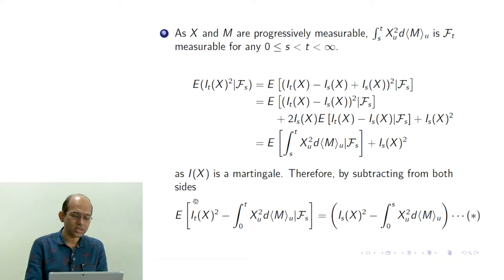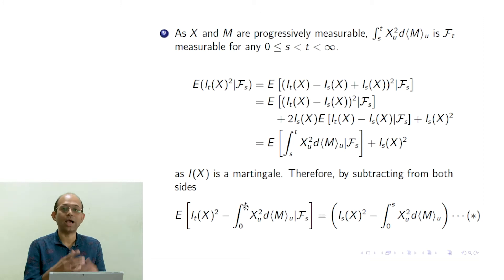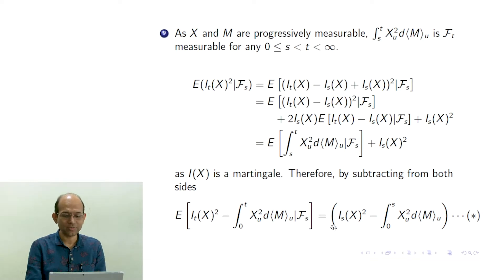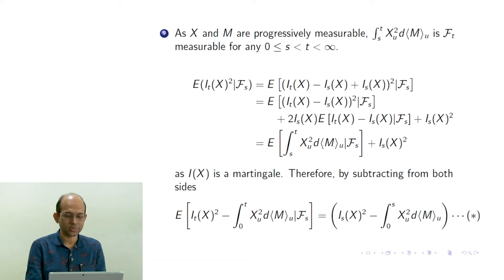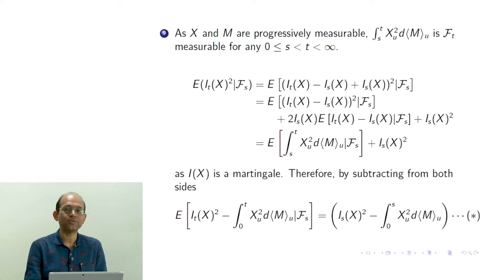If we define Y_t = I_T(X)² − ∫₀ᵗ X_u² d⟨M⟩_u, then the conditional expectation of Y_t given F_S equals Y_S. That is the criterion for a martingale. Since I is in L², its square has finite expectation, so Y_t satisfies the martingale property. Therefore this whole process is a martingale as a function of t. We name this result as star and will use it later.